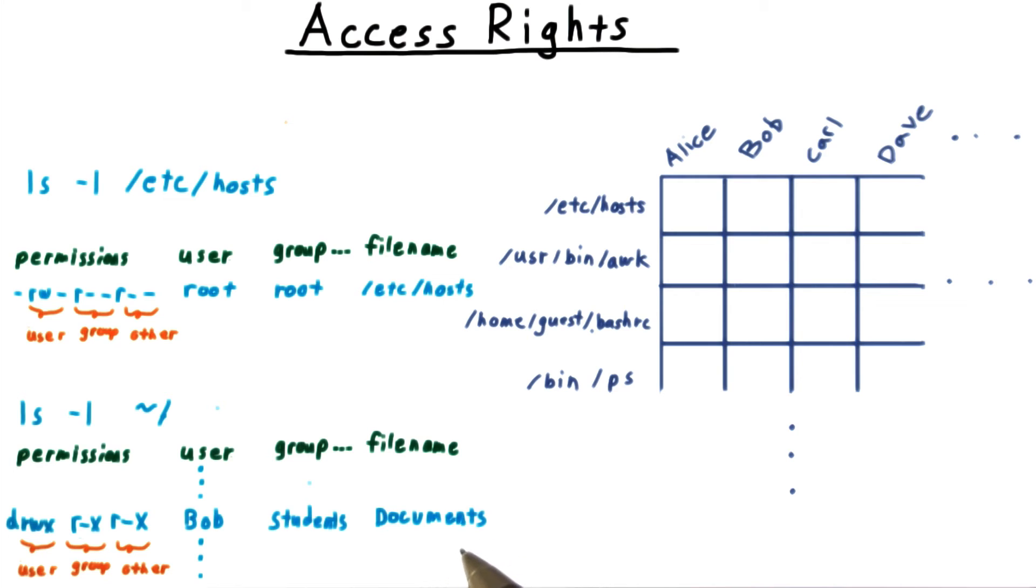Permissions on directories make the system even more complicated. The basic rule is that reading affects your ability to see what's in the directory. Writing affects your ability to create, delete, and rename files in the directory. Both of these are intuitive if you think about a directory as a file itself containing the names of the files and subdirectories in it.